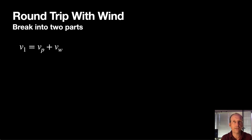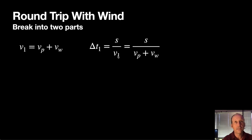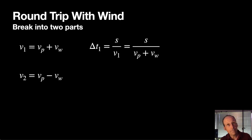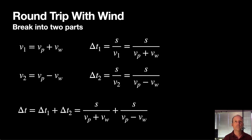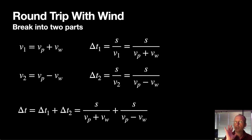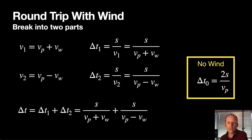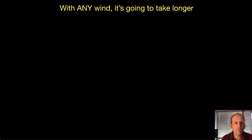I can solve for time T1 — that's the time on the way there: T1 = S/V1 = S/(VP + VW). On the way back it's moving in the same direction but against the wind, so V2 = VP − VW. I can solve for T2 the same way: T2 = S/V2 = S/(VP − VW). The total time is just the sum of those two times. So with wind we get this expression, while with no wind it was 2S/VP.